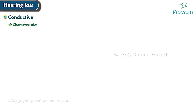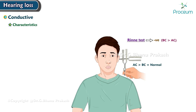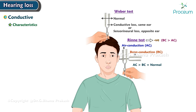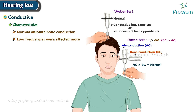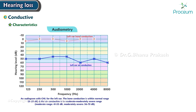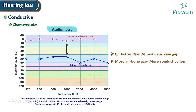The characteristics of conductive hearing loss are: negative Rinne test, that is bone conduction greater than air conduction; Weber lateralized to the poorer ear; normal absolute bone conduction; low frequencies are affected more. Audiometry shows bone conduction better than air conduction with an air-bone gap. The greater the air-bone gap, the more the conductive loss. Loss is not more than 60 decibels, and speech discrimination is good.